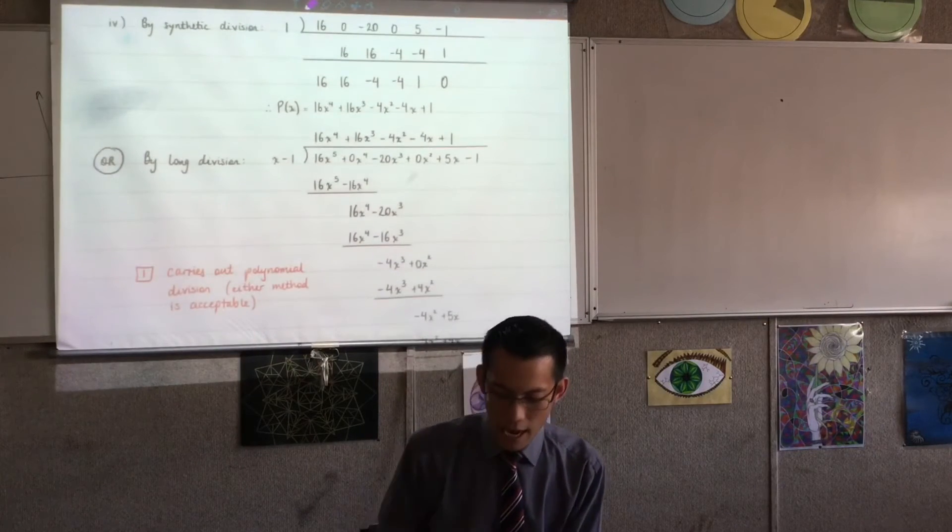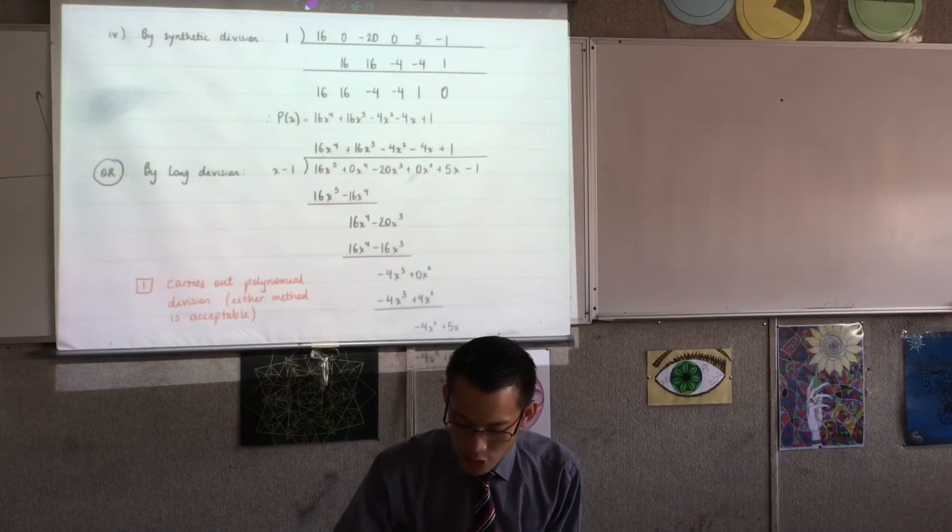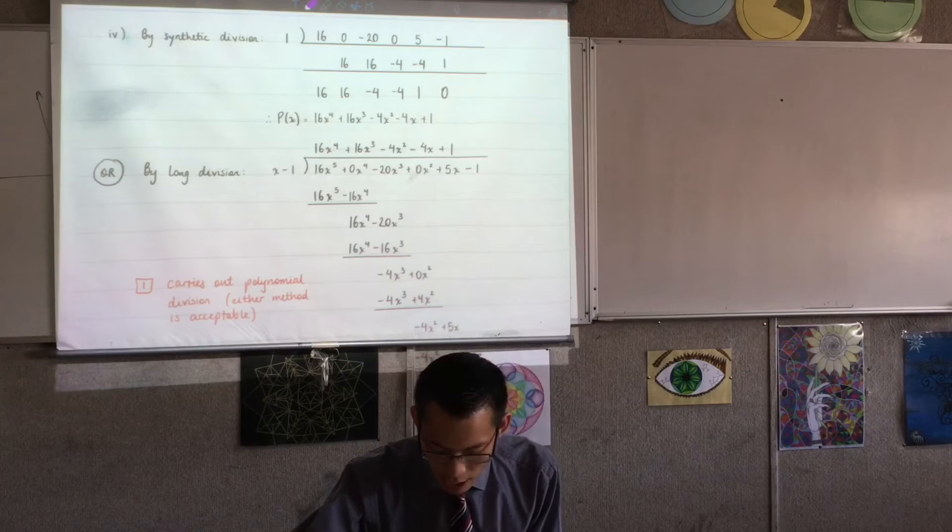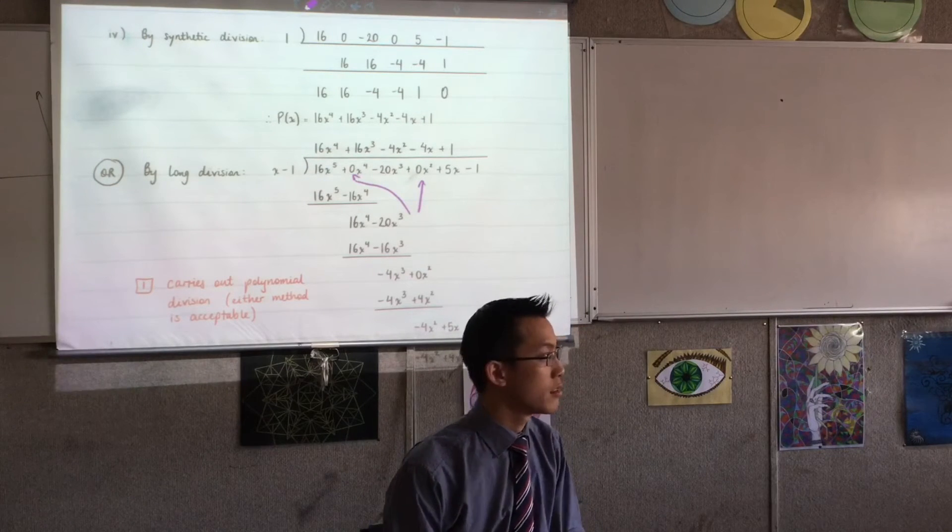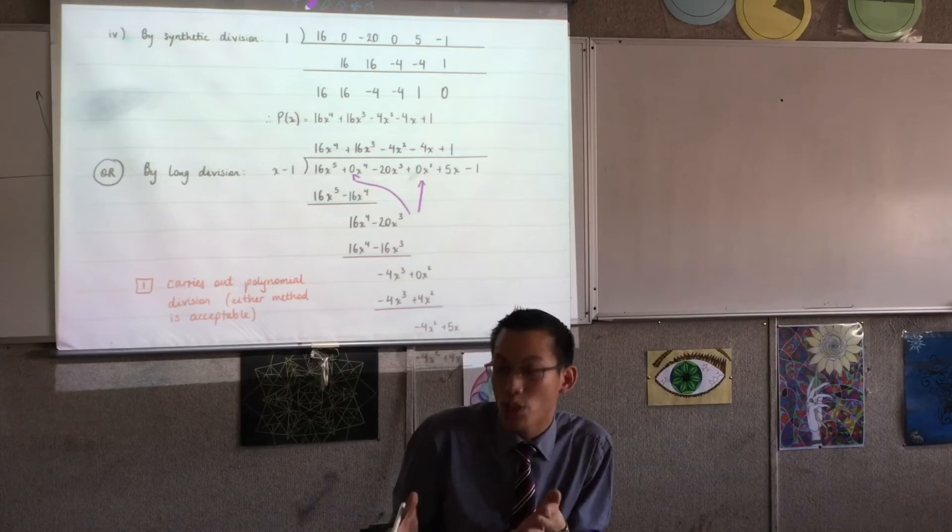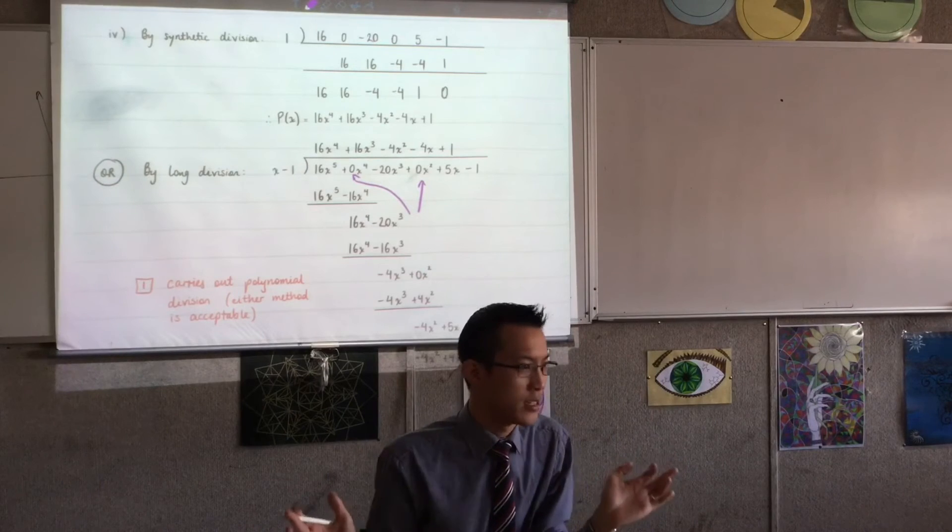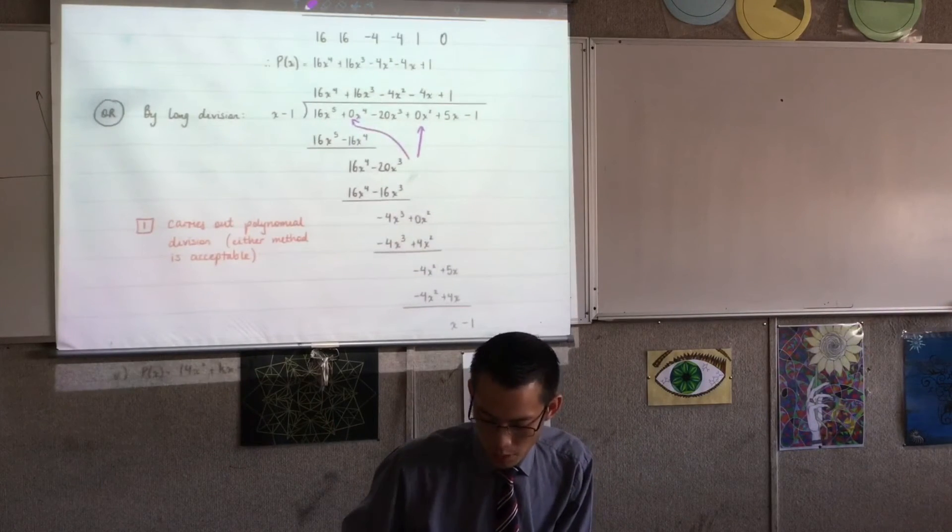Part 4. Long division or synthetic division, both fine. I think some people got mucked up because either way they went, they forgot that there were terms with zeros as their coefficients. So they forgot - they got the x to the 4 term, but they forgot the x squared term. And obviously that mucks up your entire division, whether you do it synthetic or long.